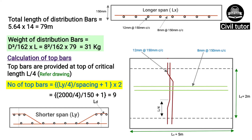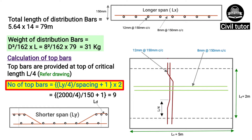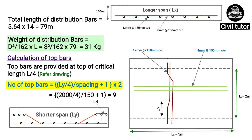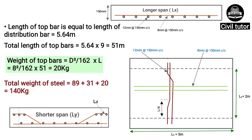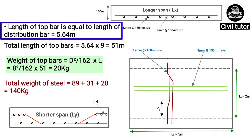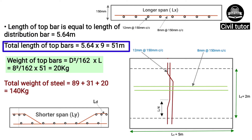Now we need to calculate the quantity of top bars required for this slab. Top bars are provided at the top over a critical length of L/4. The number of top bars = span Ly/4 ÷ spacing + 1, written twice since these are provided at 2 ends. On substituting the values, the number of top bars = 9. The length of each top bar equals the length of the distribution bar, already calculated as 5.64m. So total length of top bars = 5.64 × 9 = 51m.